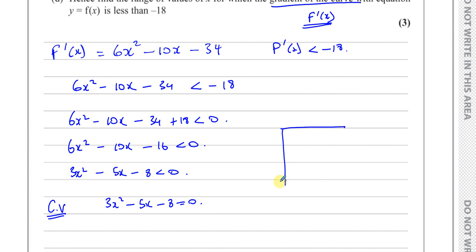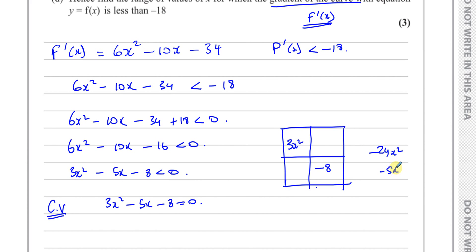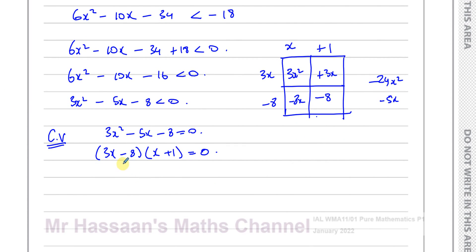To factorize 3x² minus 5x minus 8: multiply 3 and -8 to get -24, and find two numbers that multiply to -24 and add to -5 — those are -8 and +3. So split the middle term as -8x + 3x. Factorizing gives (3x-8)(x+1) equals 0, so x equals 8/3 or x equals -1. Those are the two critical values.